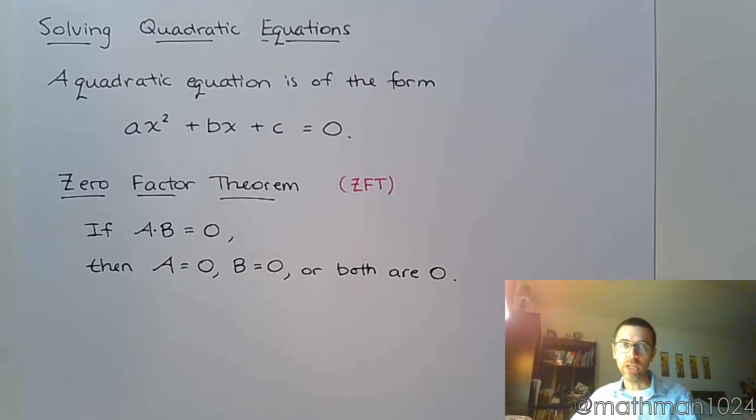And this is the only time you have a guarantee. If you've got a product equal to zero, one of those factors has to be zero. Now, again, this only works when you have a product that equals zero. If you have a product that equals two, there's no guarantee about what either of those numbers are. You don't know.